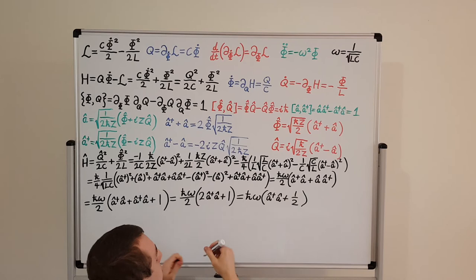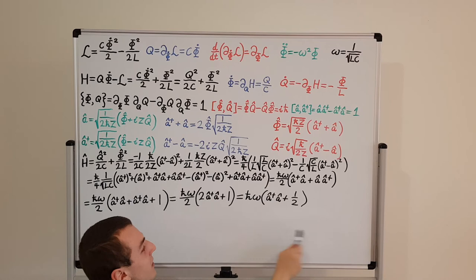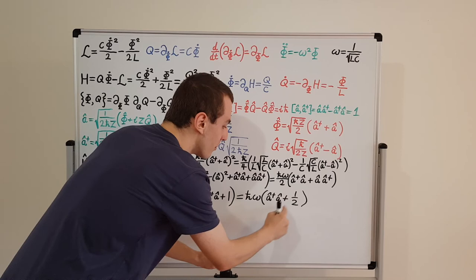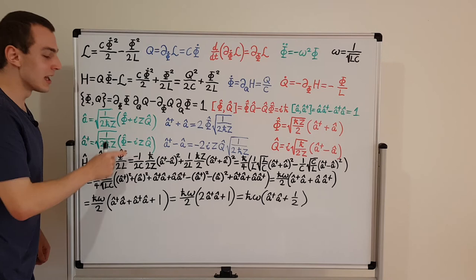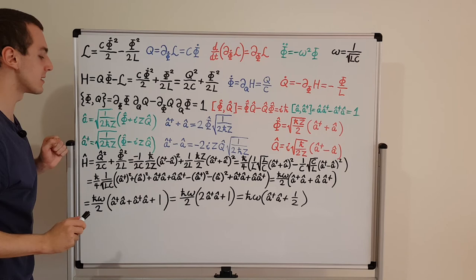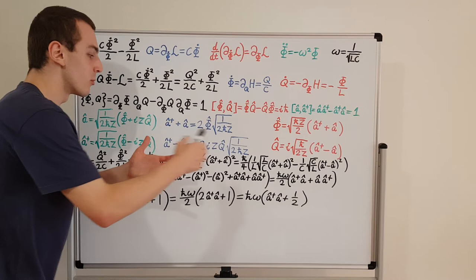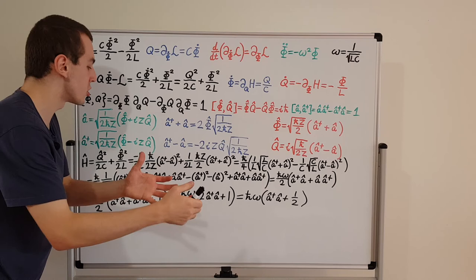This is the form of the Hamiltonian from the quantum harmonic oscillator — exactly the same form when written in terms of the ladder operators. We can label a dagger a as the number operator. But keep in mind these are not the same ladder operators as with position and momentum. Instead of mass, we have capacitance; instead of k from Hooke's law, we have one over the inductance; and instead of position and momentum, we have flux and the conjugate charge.